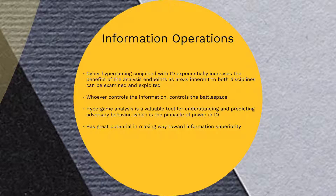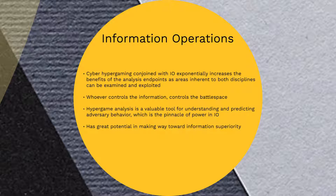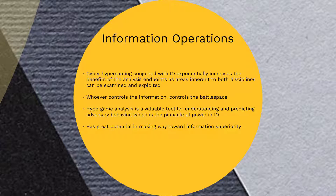Cyber hypergaming combined with information operations increases the benefits of the analysis for both disciplines. Researchers and analysts have noted the ability of hypergame analysis to model deception and surprise. The use of information to influence and mold adversary responses is a key methodology within IO and cyber. Understanding and predicting adversary behavior is crucial. Another important aspect of cyber and IO revolves around the concept of information superiority. On the battlefield, the one who has the most information is the one who will most likely prevail.